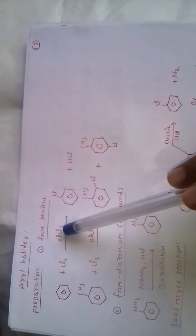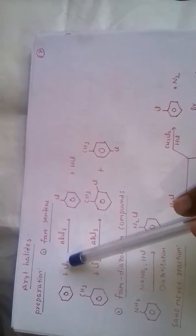AlCl3 acts as a Lewis acid catalyst. It accepts Cl- from Cl2 and forms Cl+.